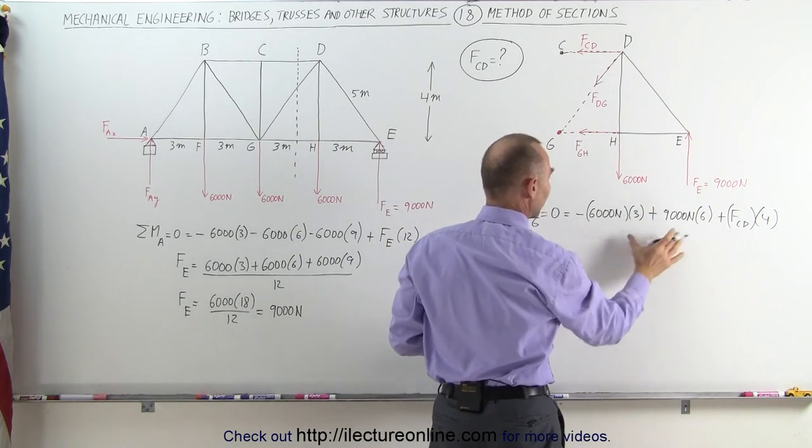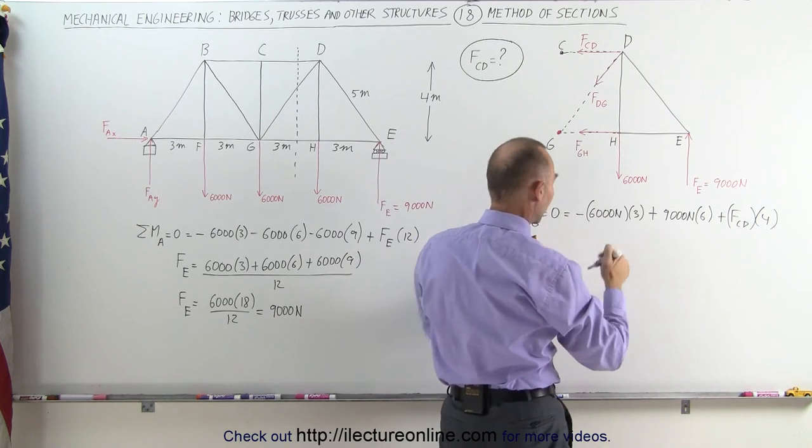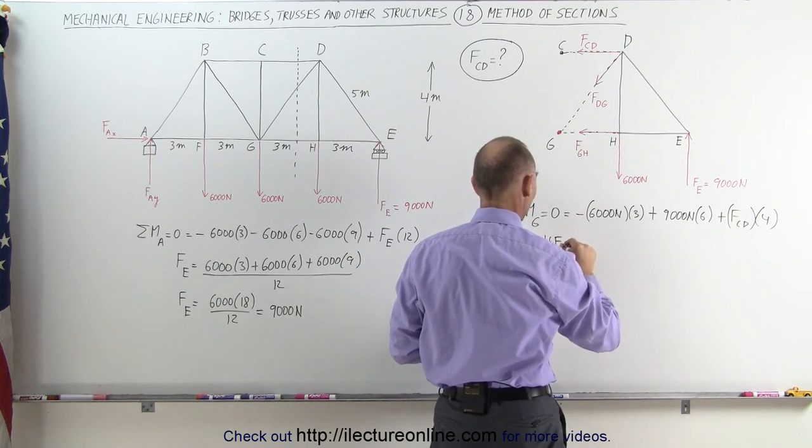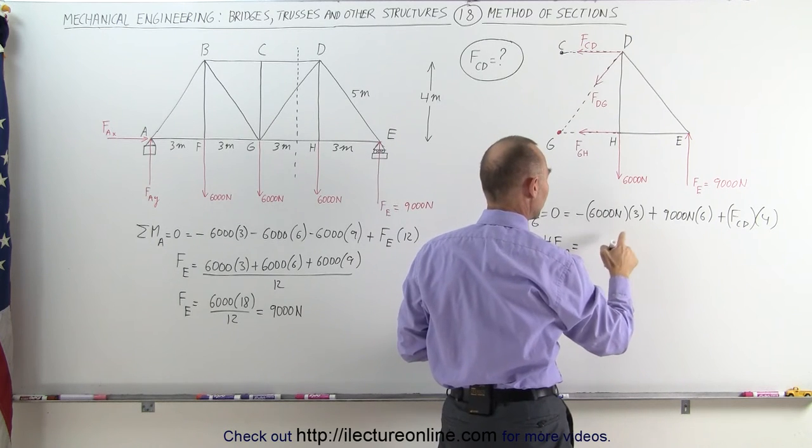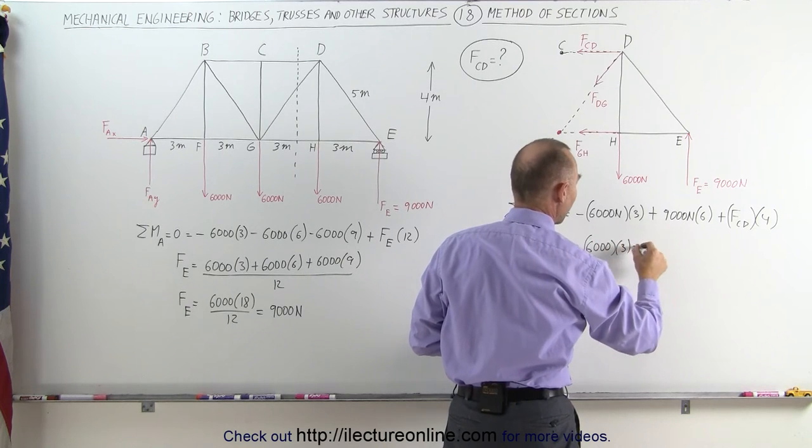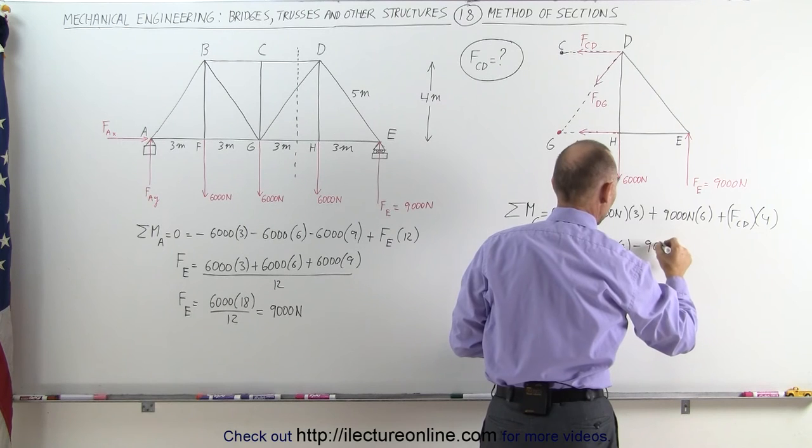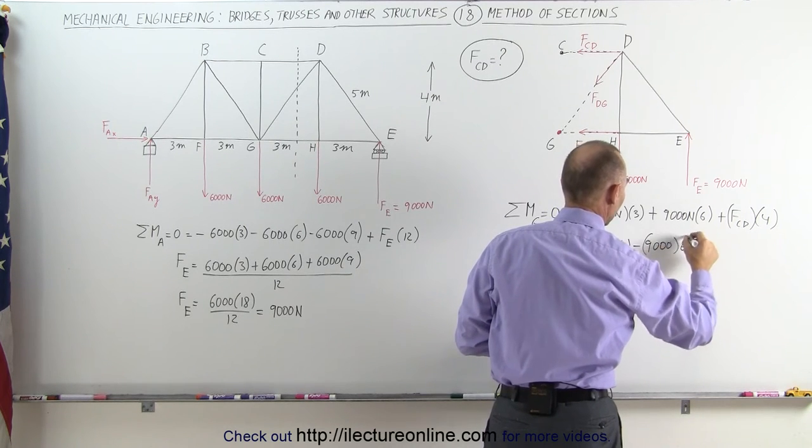Which means that if I then move all this to the other side, this becomes negative, that becomes positive, I turn the equation around, I get 4 times the force CD is equal to, this becomes positive, negative 6,000 times 3 minus, this becomes negative when it goes to the other side of the equal sign, 9,000 times 6.